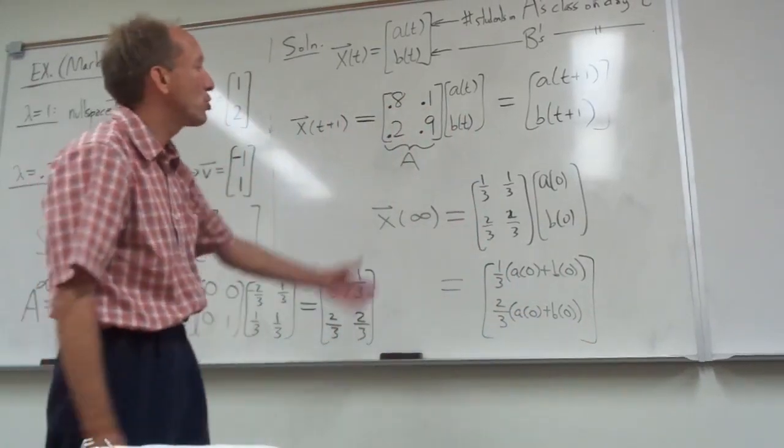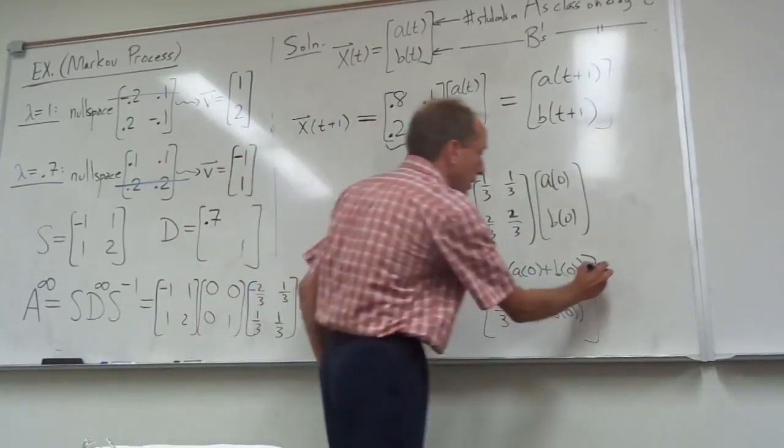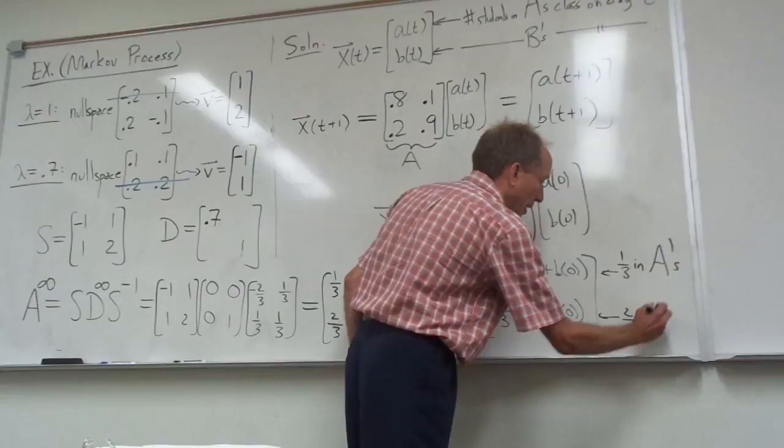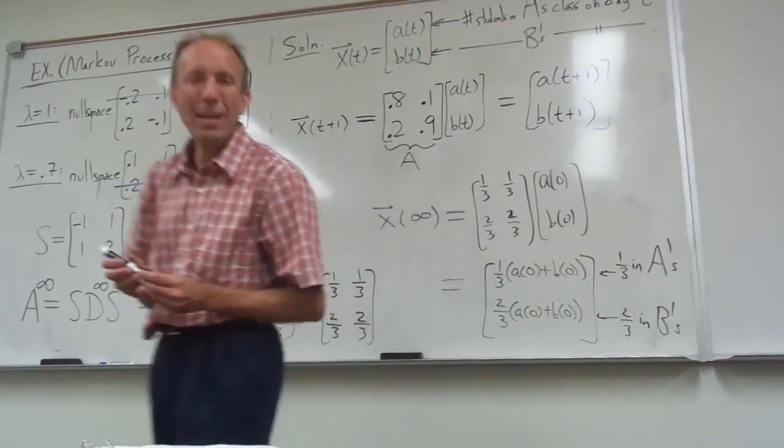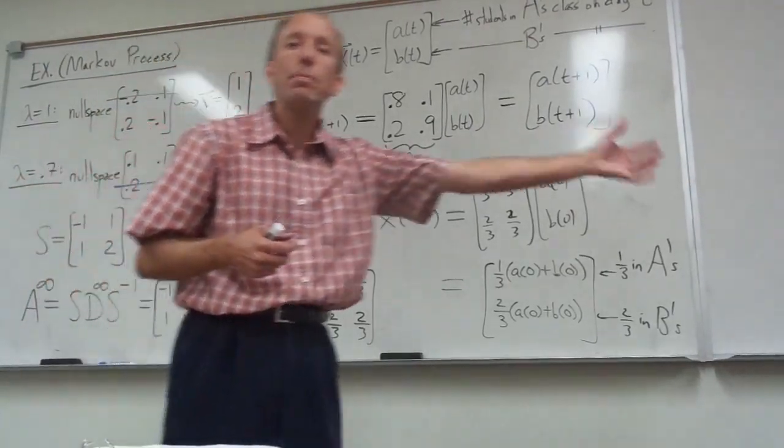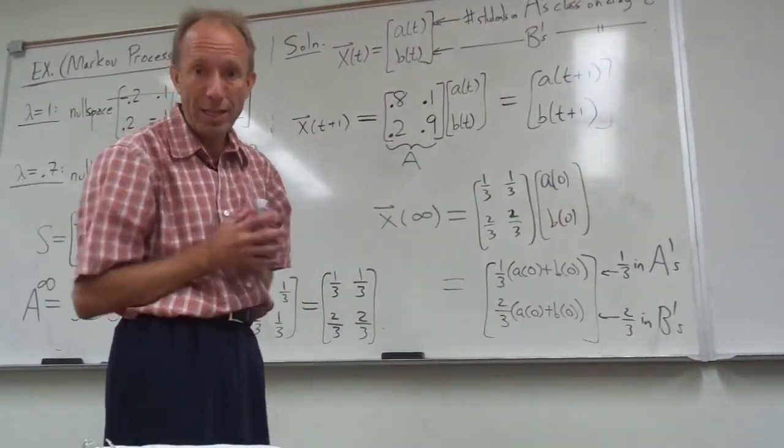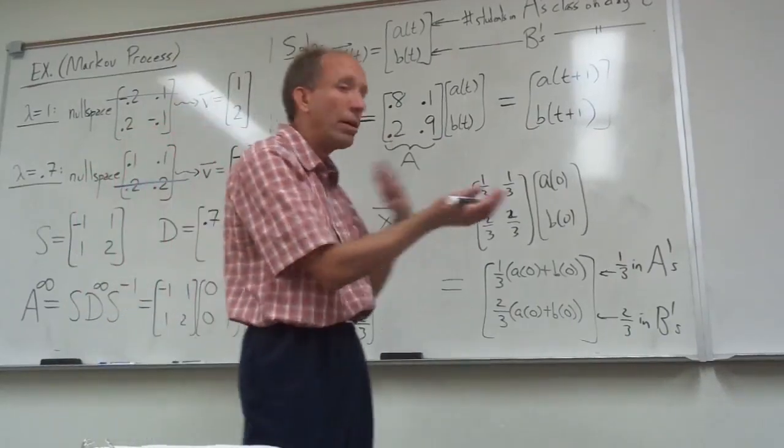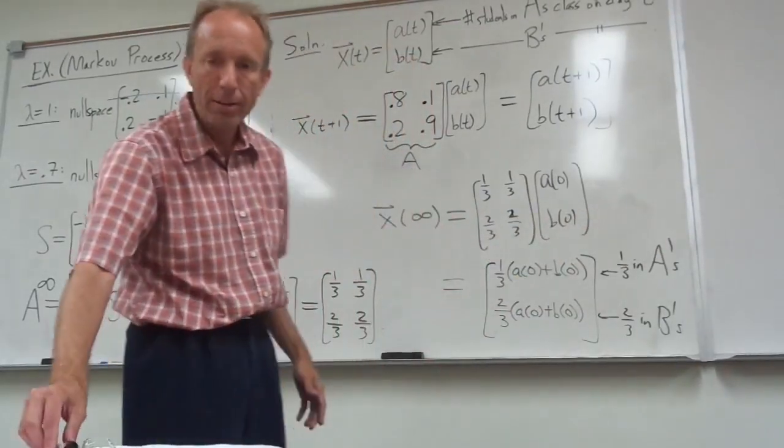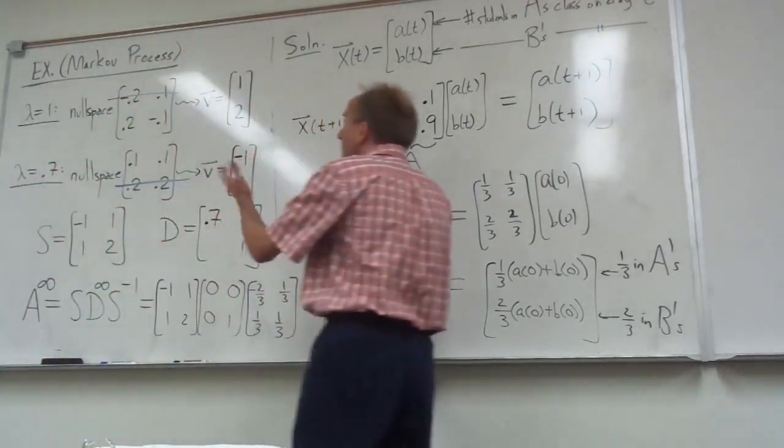In other words, of the total students in both sections combined, 1 third of them end up in Professor A's class and 2 thirds end up in Professor B's class. It kind of makes sense, doesn't it? Because Professor A was losing 20 percent of his students, twice as many as Professor B. Professor B was only losing 10 percent of his students. So it's sort of a two to one ratio. This is precisely a two to one distribution of students at the end of the semester.